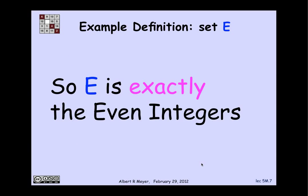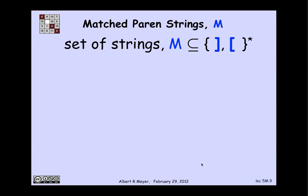So what we can conclude from this is that E is exactly the even integers, because there's nothing else there, except those ones that were built up in the way indicated. So let's look at a slightly more interesting example now. I want to define the set of strings that consist solely of left and right parentheses, such that the left and right parentheses match up.